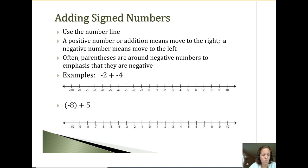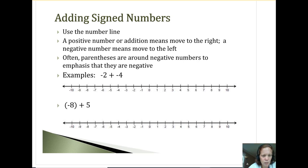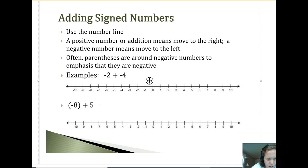Just note: sometimes we might see problems with parentheses around a negative number, like around this negative eight. That's just trying to emphasize that it's a negative number. So this bottom one, I could just rewrite that as negative eight plus five — that'd be the same.